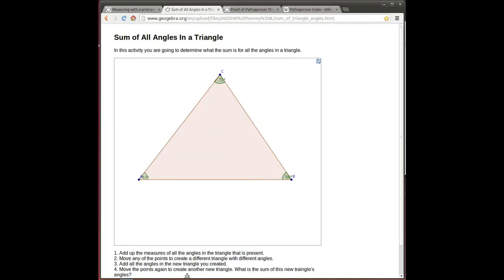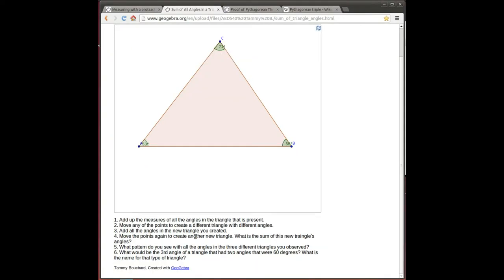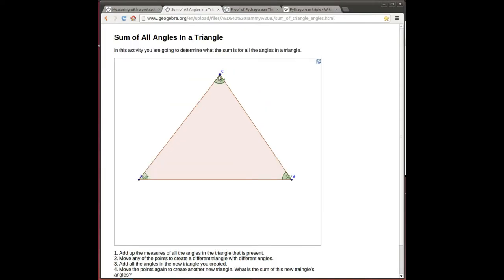A famous and very important theorem from Euclidean geometry is that given any triangle, the sum of the angles of the triangle is 180 degrees. In this app, prepared by Tammy Borchard, it's another GeoGebra app, we're allowed to move and adjust the triangle and calculate the sum of these three angles. And in every case, the sum of those three angles is going to be 180 degrees.